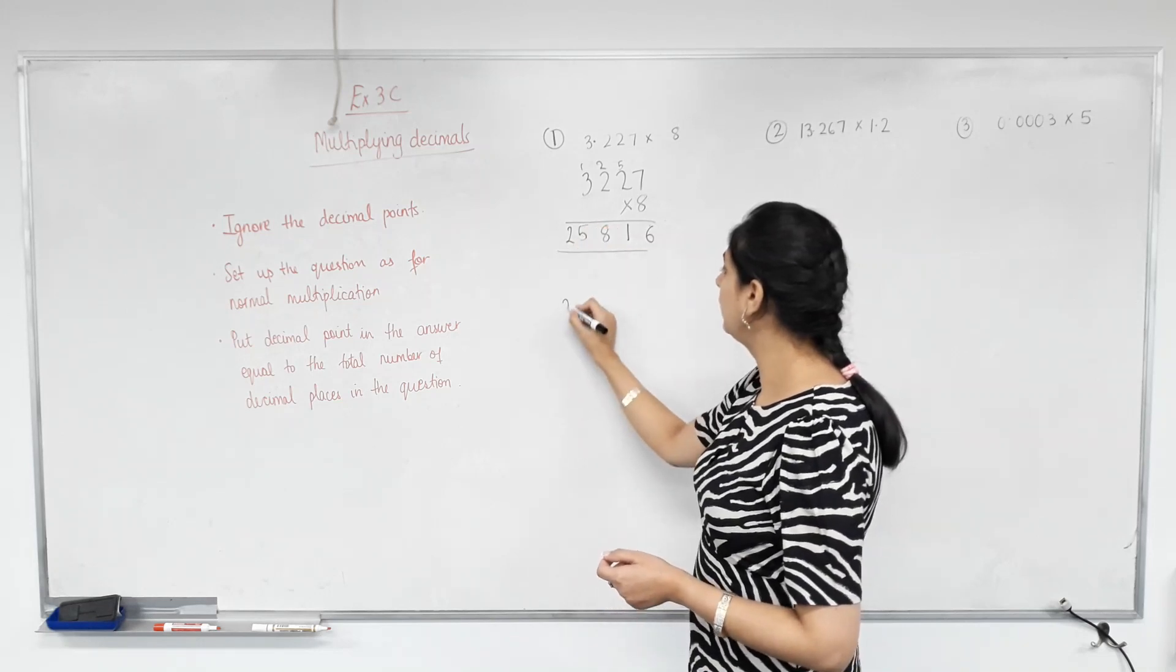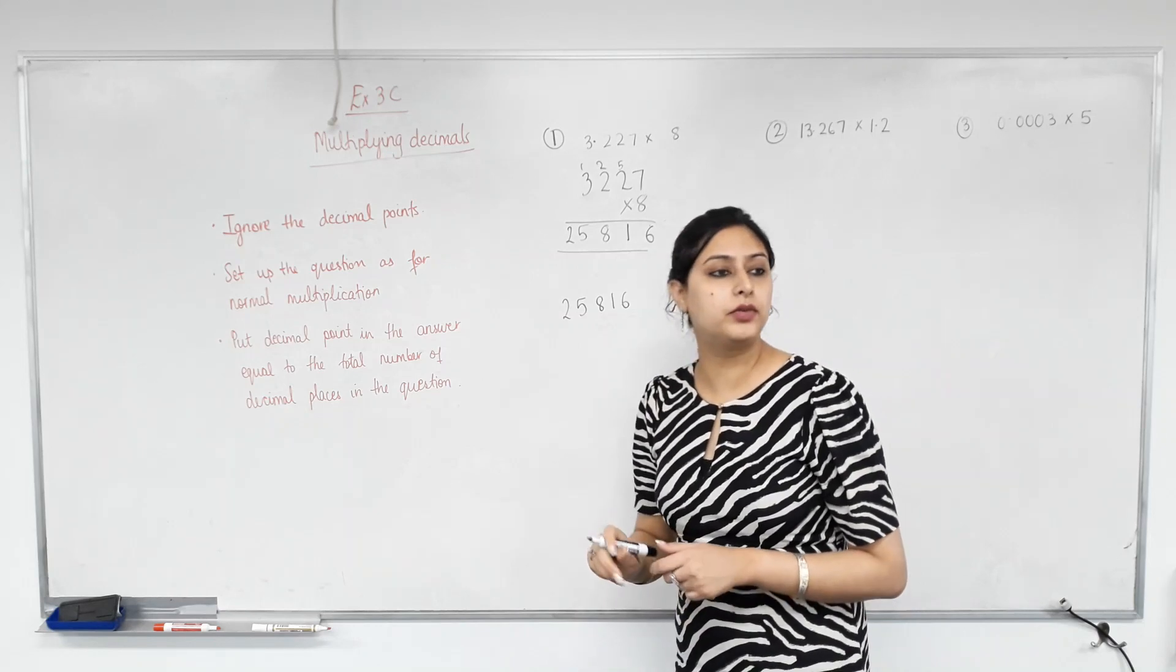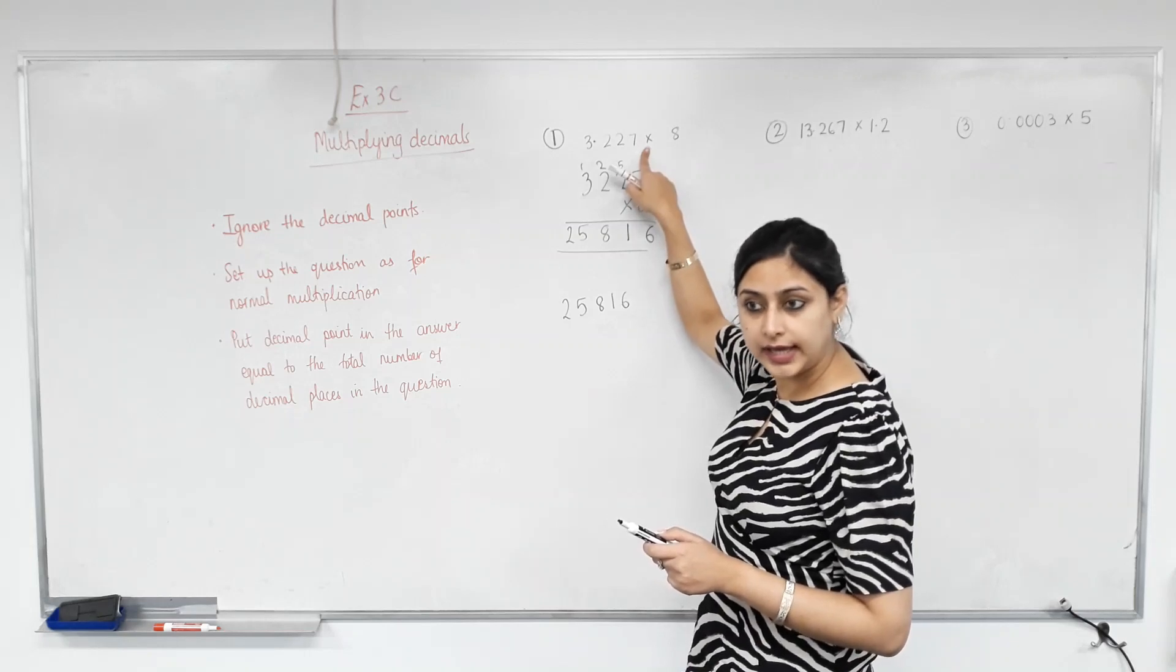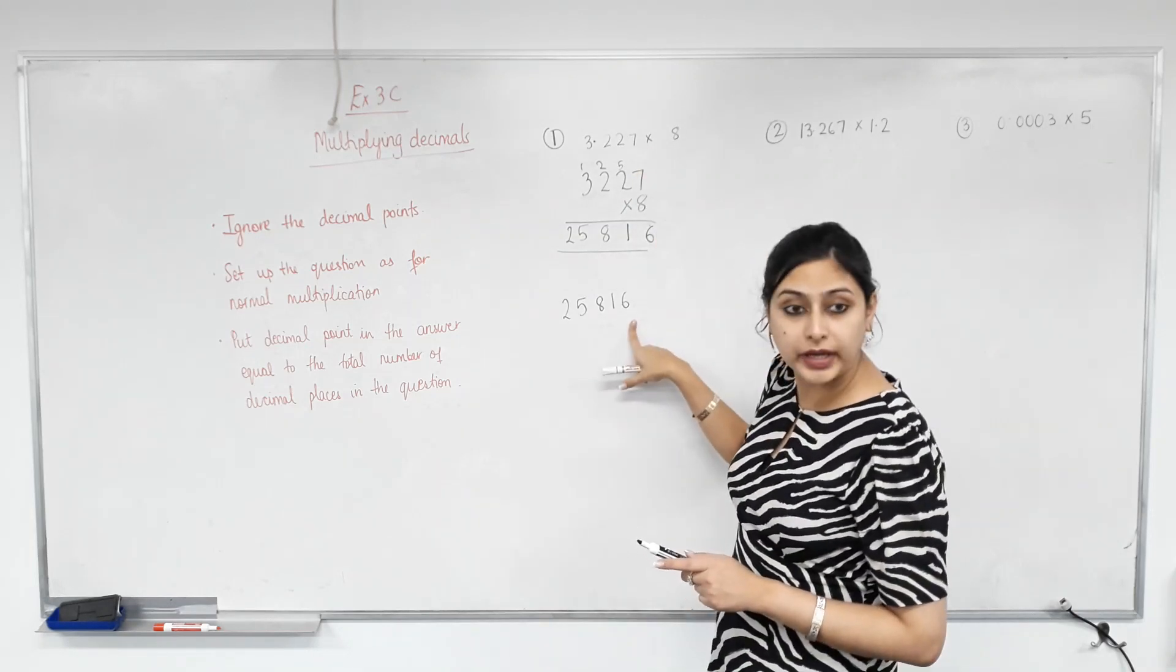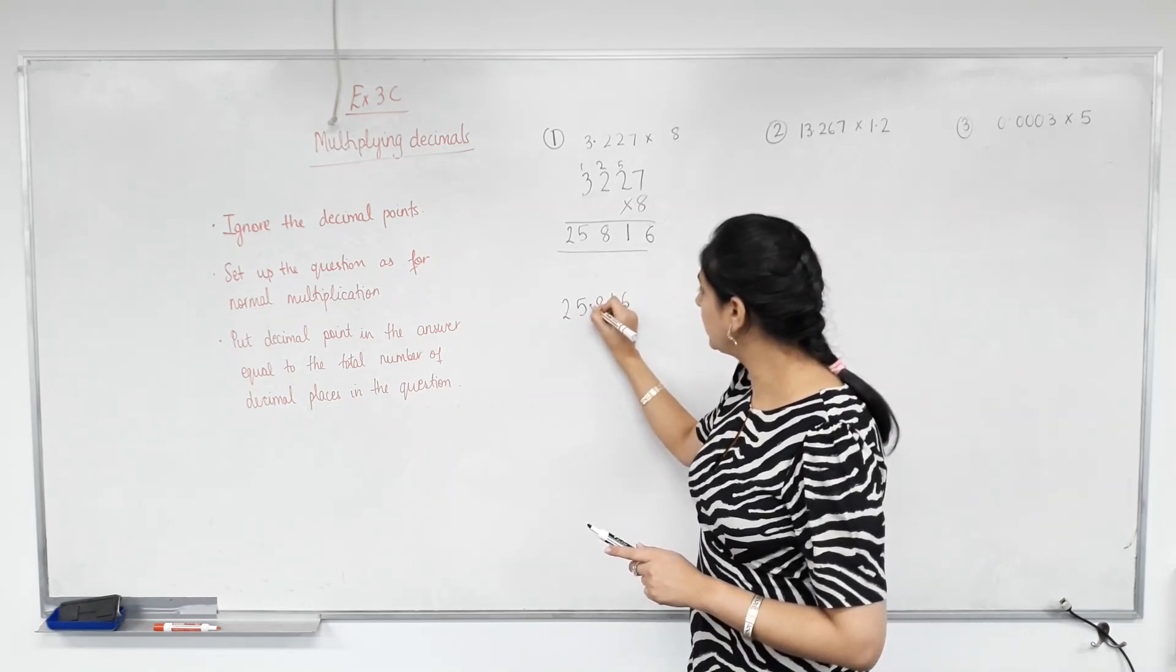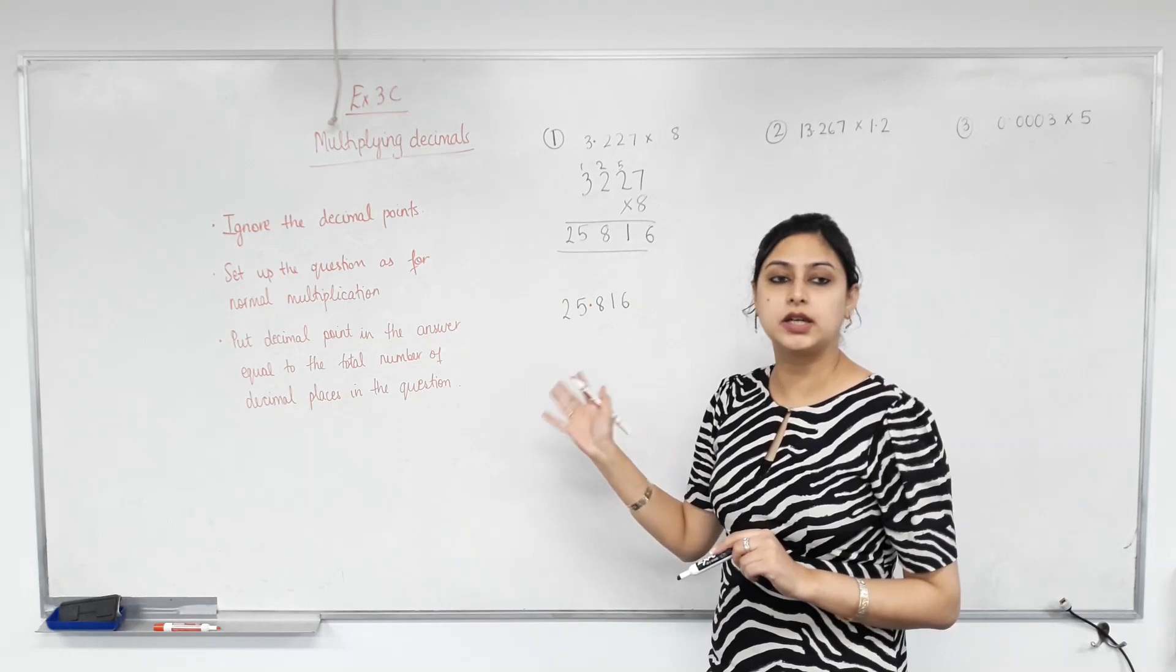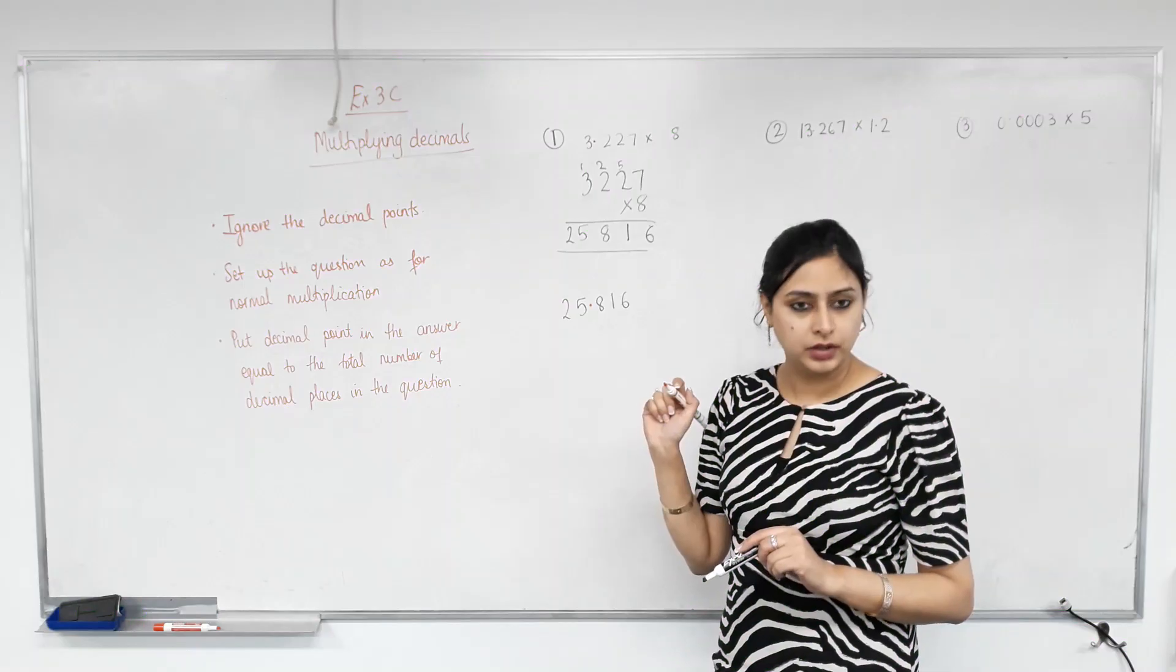Now, the answer will be... Let's count the number of decimal places in the question. 1, 2, 3. You'll have the same number of decimal places in the answer. So counting from the right, 1, 2, 3. That means you put the decimal here. That's all there is. So if you can do normal multiplication, which you all should be able to, there's nothing difficult about multiplying decimals. Does that make sense now?